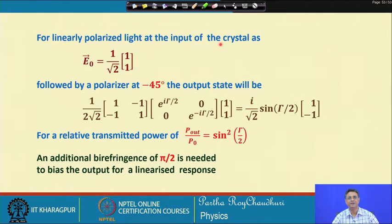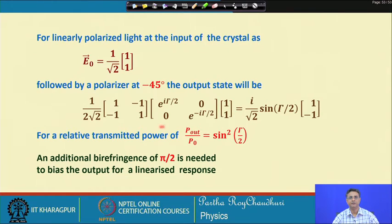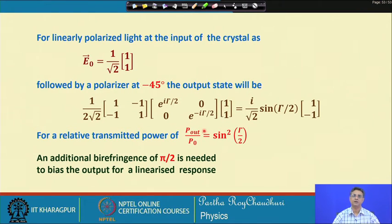For linearly polarized input at 45 degrees followed by a polarizer at minus 45 degrees, the output state includes the effect giving sin(tau/2) in the field amplitude. Taking the square, P_out / P_0 equals sin²(tau/2).